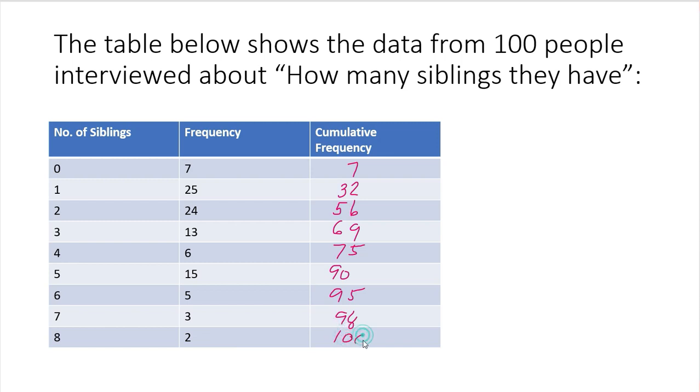Actually, the cumulative distribution table will also confirm whether we had completely done the frequency. Because you need to land your last data here. So your last data should be your N or your total number of data. So it's 100 people.